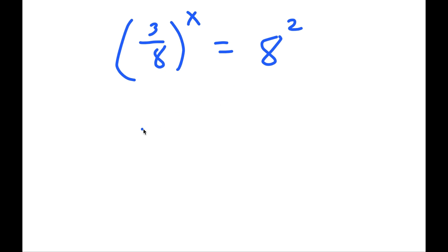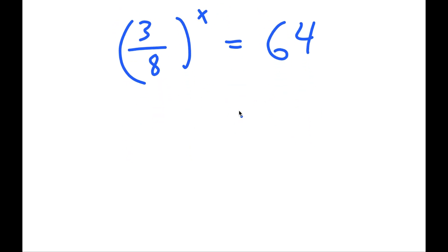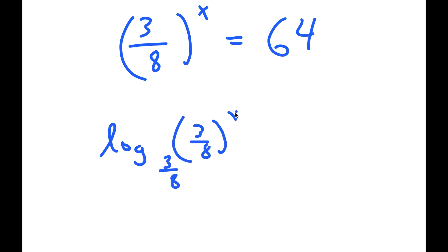Now 8 to the power of 2 is 64, so I get 3 over 8 to the power of x is equal to 64. From here, I'm going to take log base 3 over 8 on both sides.